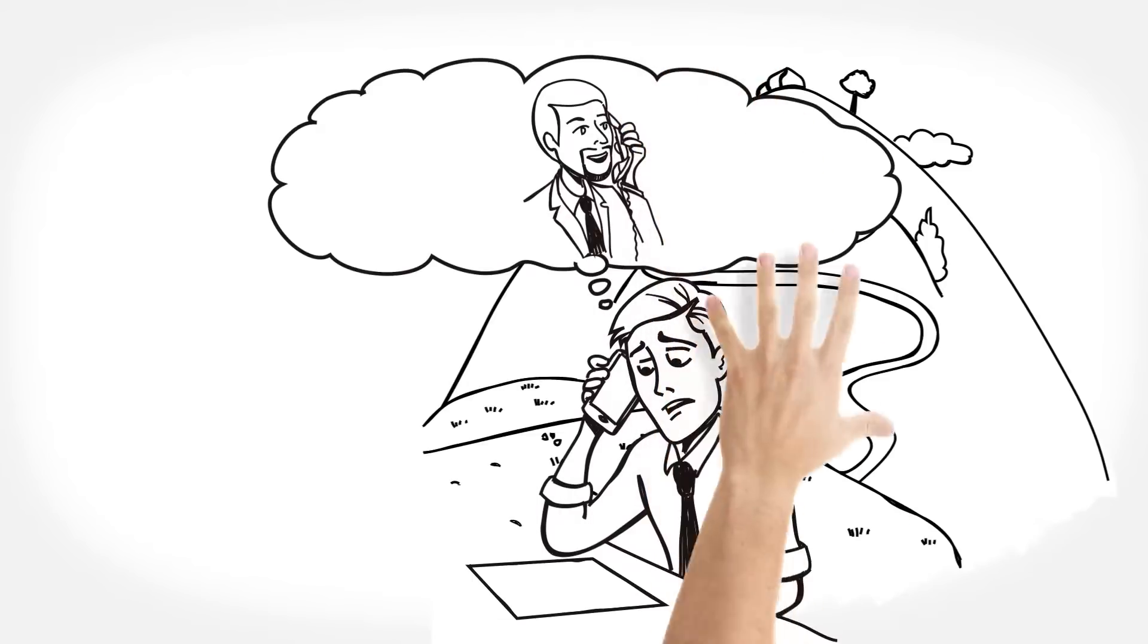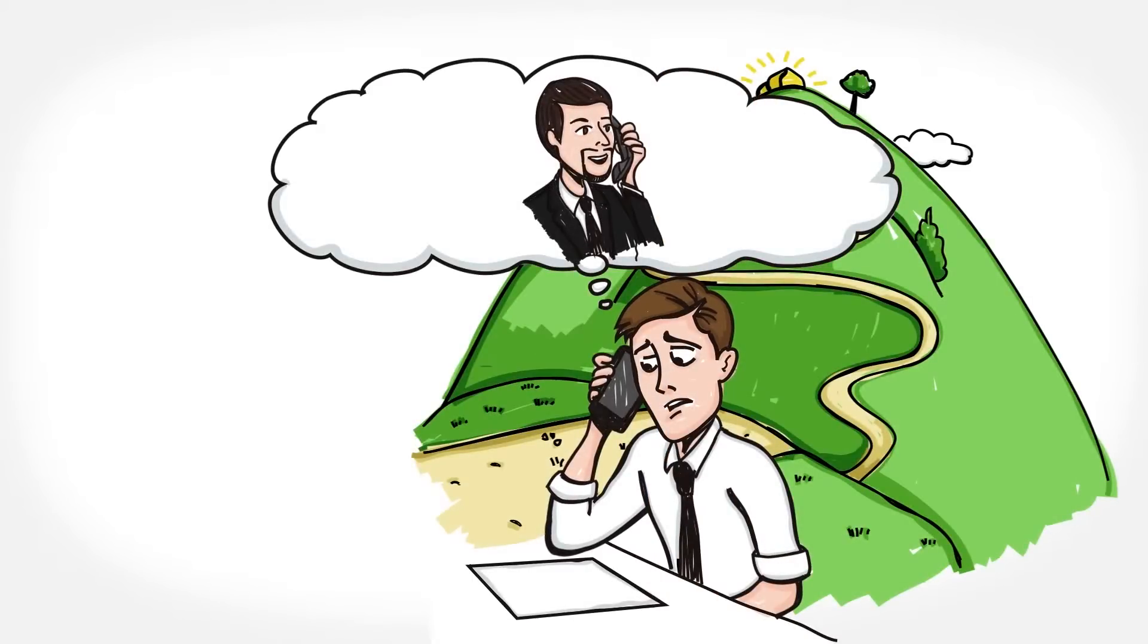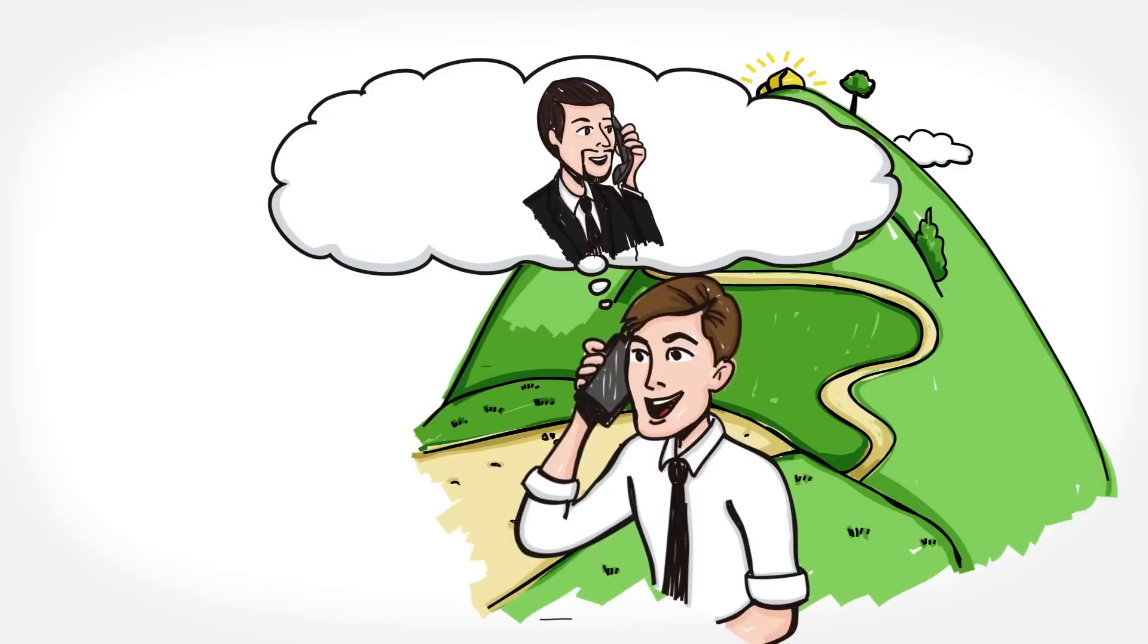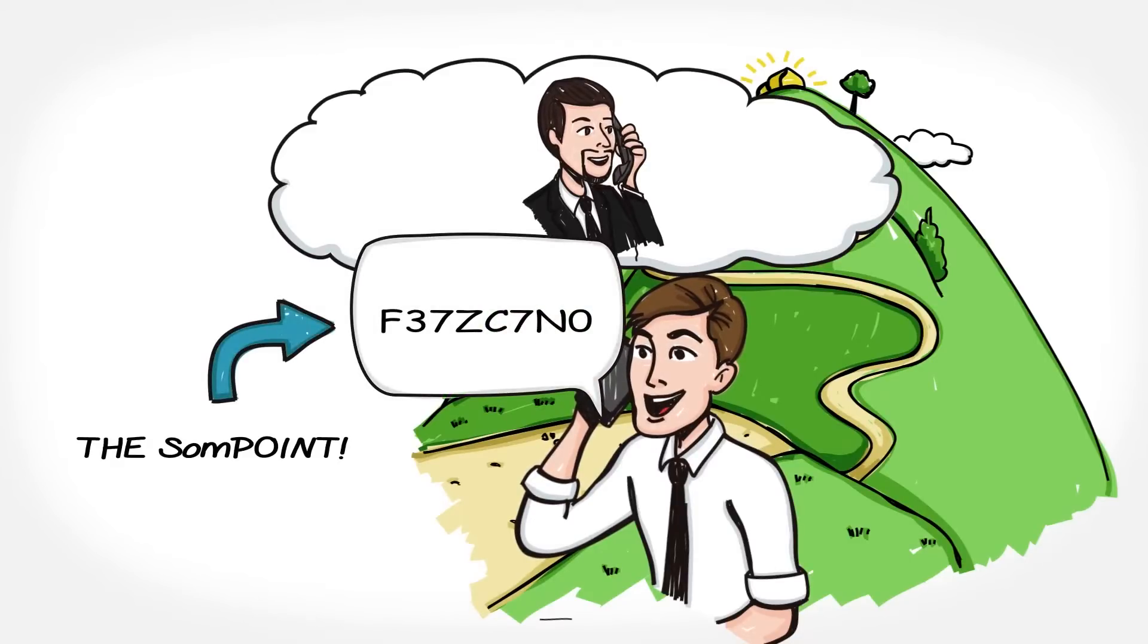Instead of having a lengthy, frustrating conversation trying to explain your whereabouts, all you have to do is give your partner the SomePoint, the short string of eight characters.